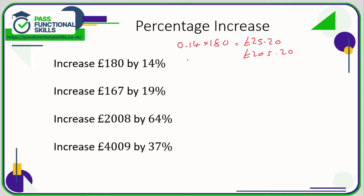But there is a much quicker way. Instead of working out 14% and then adding it on, we use a multiplier for a percentage increase, which is the basic percentage multiplier with one added to it. So if I add one to 0.14, I get 1.14, and if I multiply 180 by 1.14, I go directly to that answer of 205 pounds 20.